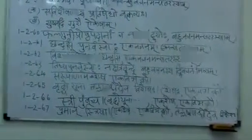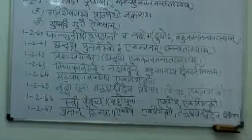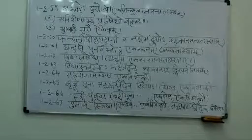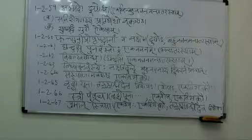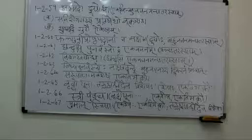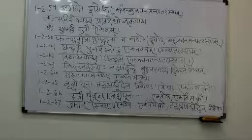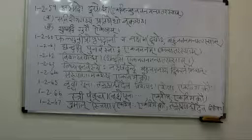We will go to the next sutra, the 59th, the second pada of the first chapter. The sutra reads: ASMADO DVAYOSCHA. This sutra contains two words: ASMADHA and DVAYOSCHA. From the former sutra, the words Ekasmin, bahuvachanam, and anyatarasyam will be anuvarti — that is, following.